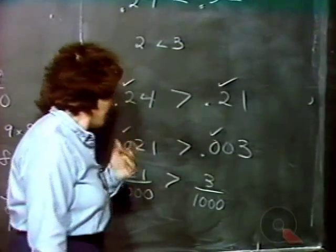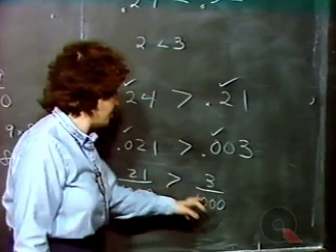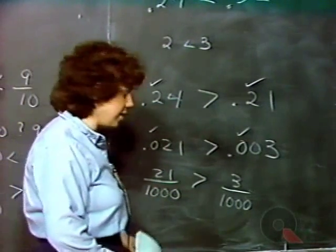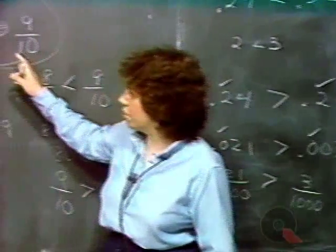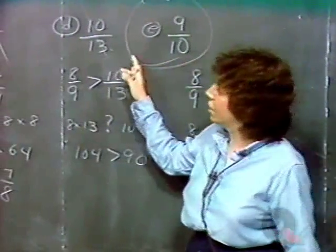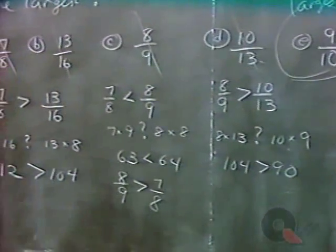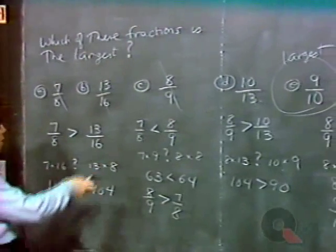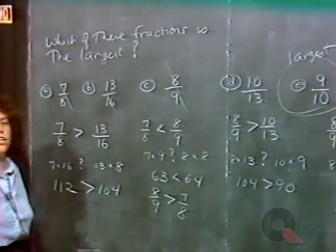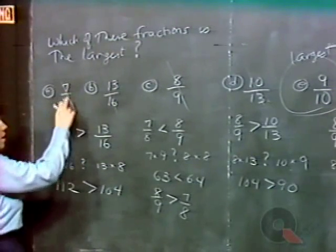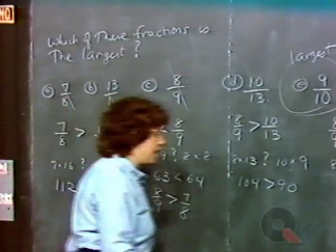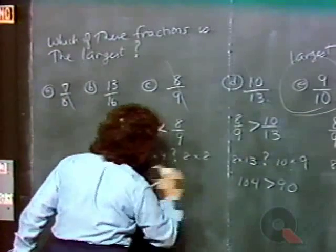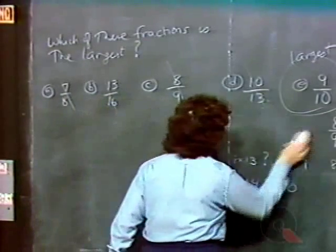You can change decimals to fractions to help compare, or change fractions to decimals. Another way of handling the earlier problem — which of these fractions is the largest — is to find the decimal representation for each fraction. For example, seven-eighths means 7 divided by 8, so you just perform the long division.